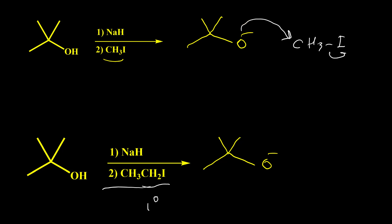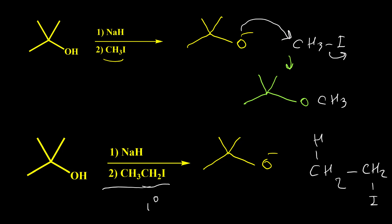When we have CH3I, the O-negative can easily react and we get the methyl ether product. But when we have any other alkyl halide, instead of SN2 we get E2 reaction — the anion takes a hydrogen and forms an alkene. So the reaction of a tertiary alkoxide anion with a primary alkyl halide is very unlikely, and most of the time this reaction cannot be performed for Williamson ether synthesis.